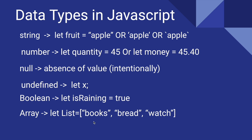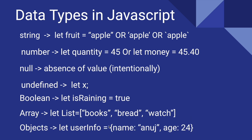Then we have array. An array is like a list of data where you can store certain items — they can be strings, numbers, or booleans. For example, a list of books, bread, and watch. Then we have object. An object is written inside curly brackets and is a key-value pair. For example, a user info object with a name key whose value is 'Anuj', and another property age with a value of 24. We'll discuss all this in the code editor.